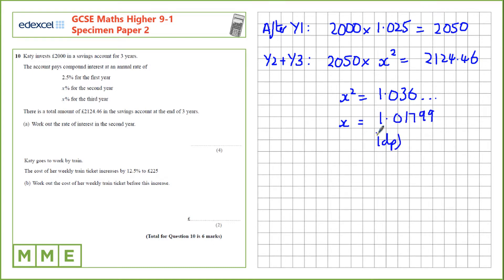So, to one decimal place, that's 1.018. This was a multiplier for a 2.5% increase, though this is a 1.8% increase.